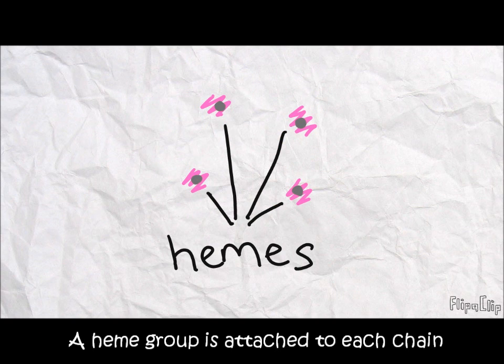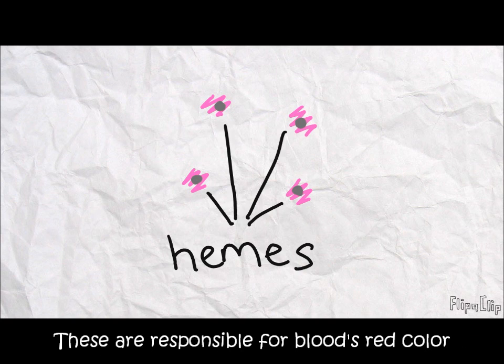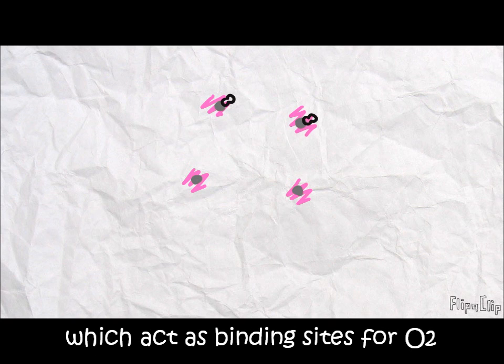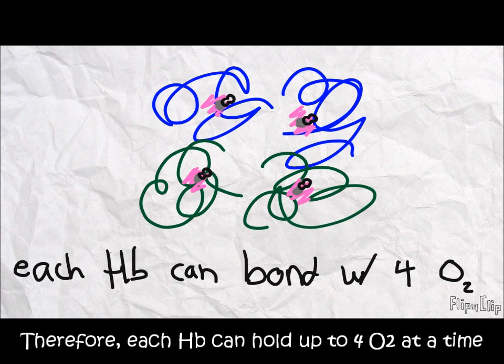A heme group is attached to each chain, and these are actually responsible for blood's red color. Each heme contains an iron atom, which acts as binding sites for the oxygen. Therefore, each hemoglobin can hold up to four oxygen molecules at a time.